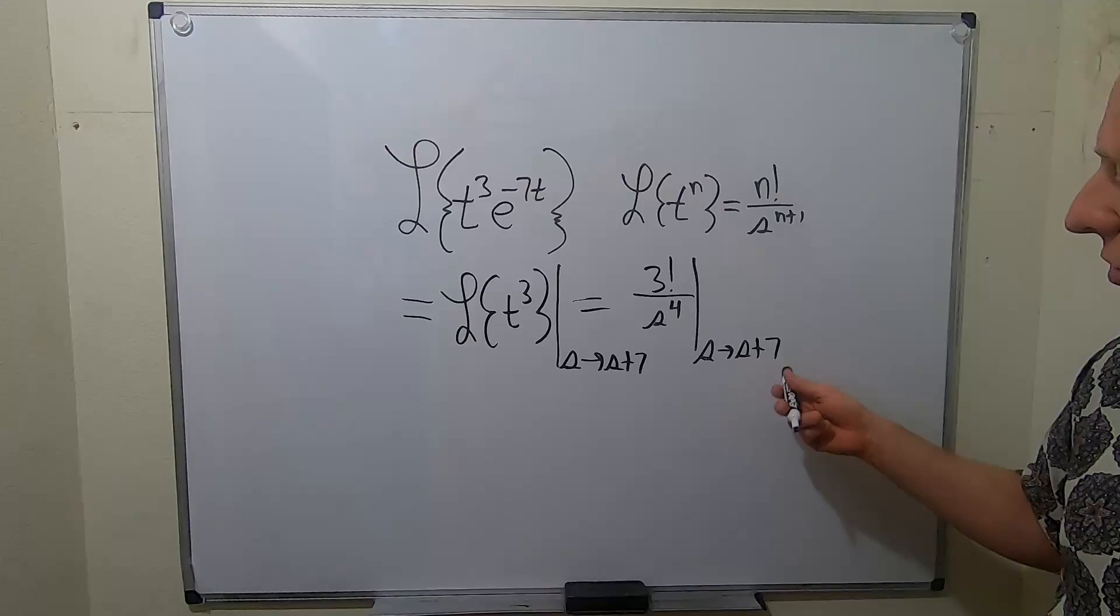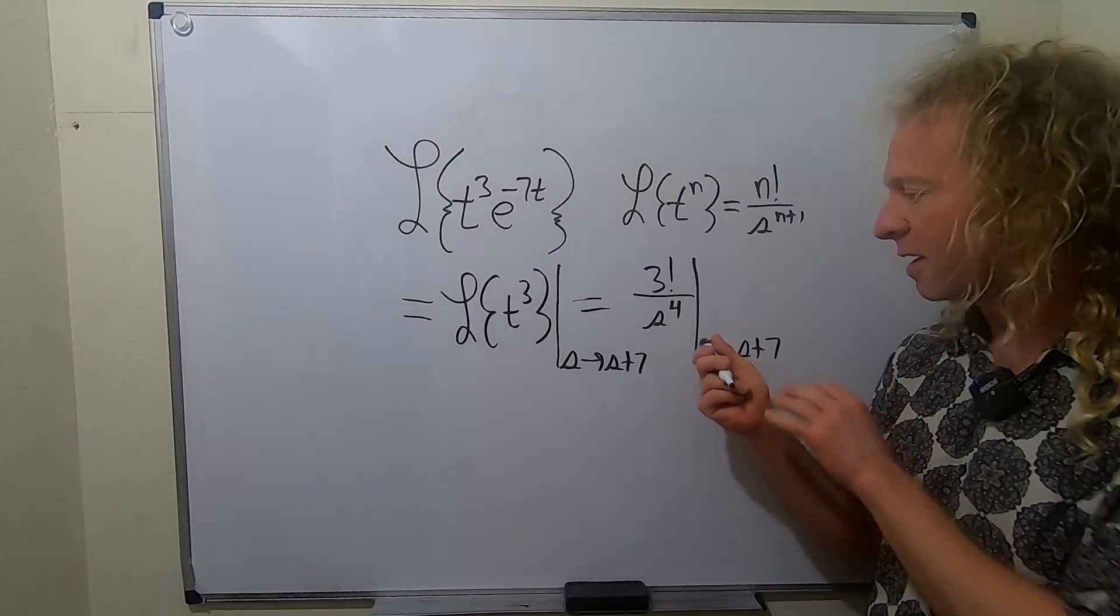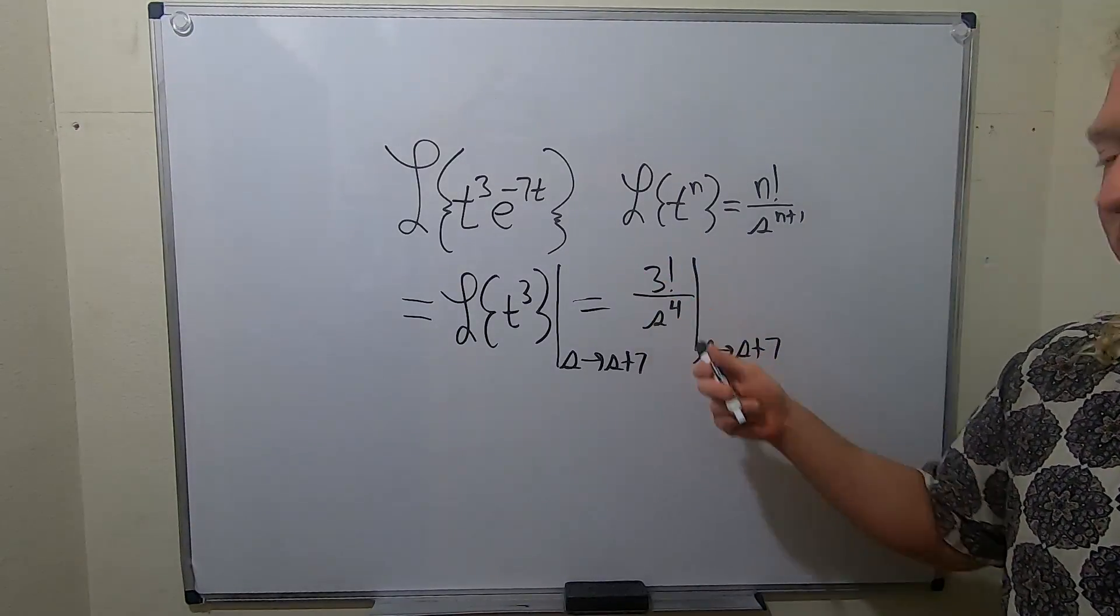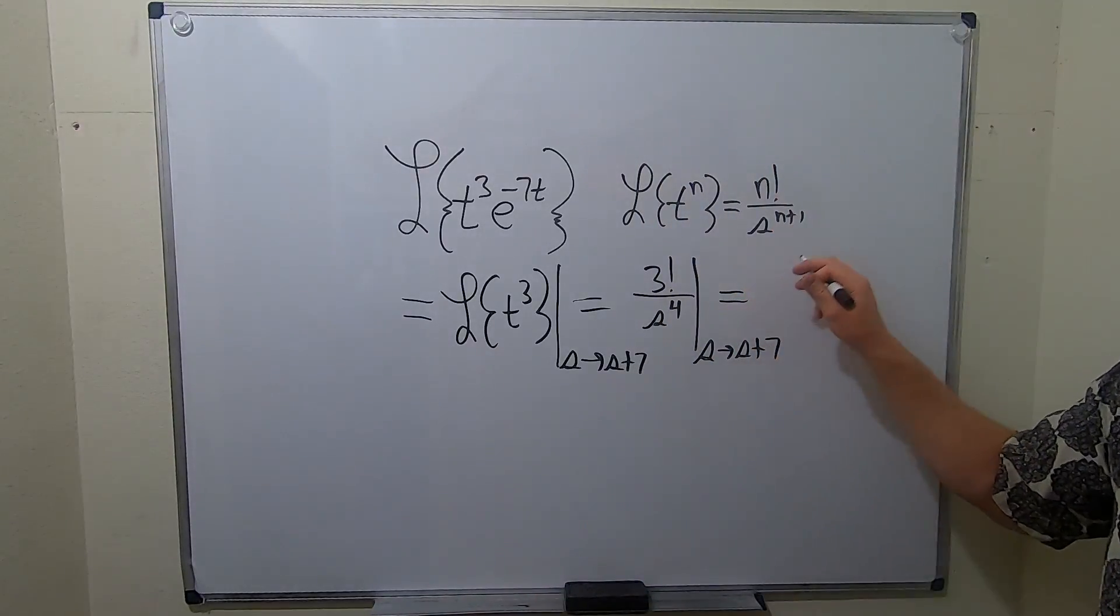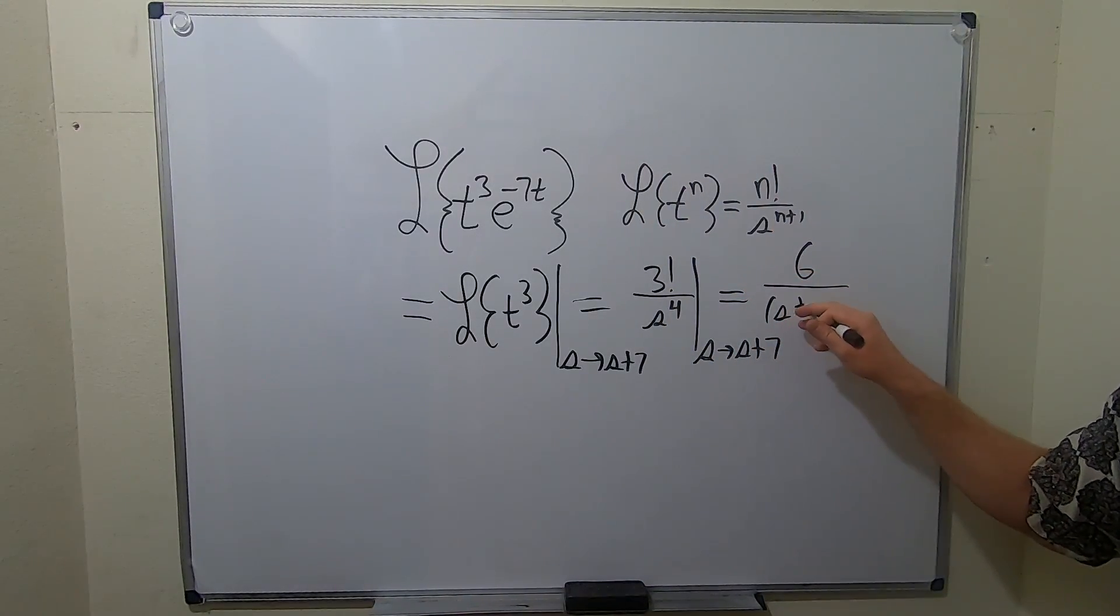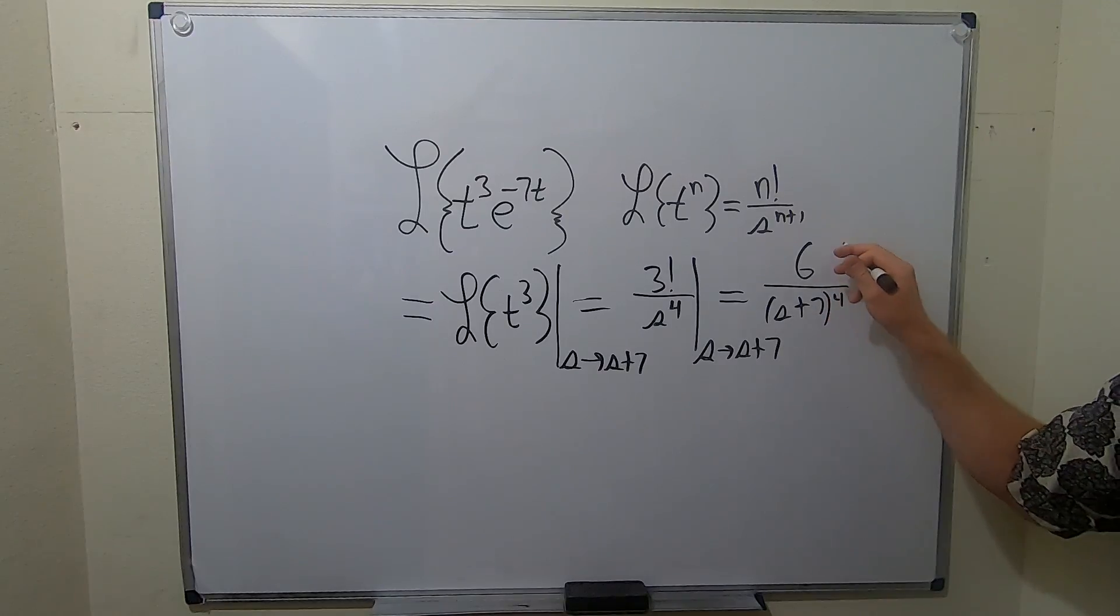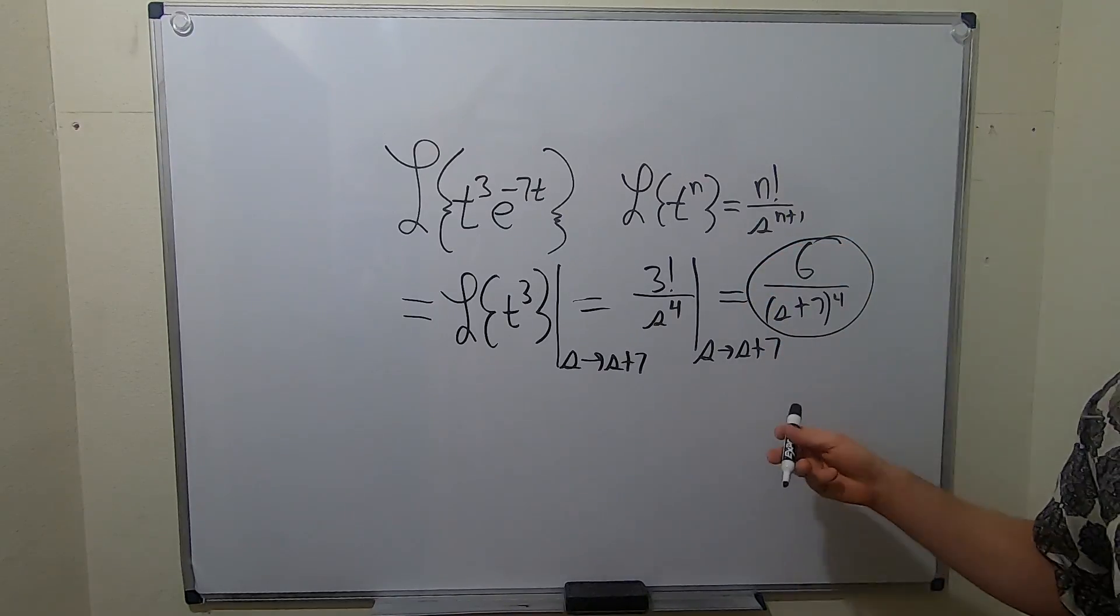Good stuff. So the last thing to do maybe now is plug in the s plus 7 for the s. 3 factorial is 3 times 2 times 1, so that's 6. This will be equal to 6 over, and then we have s plus 7 to the 4th power. And that is the final answer.